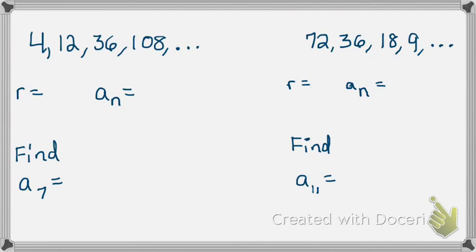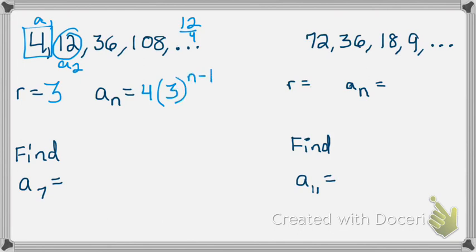Let's look at some other examples. We have 4, 12, 36, 108. First thing I want to find is my common ratio. Take your second term and divide it by your first term. So when I do 12 divided by 4, I get 3. That's my common ratio. Now to write my explicit formula, I'm going to write the first term which is 4 times my common ratio which is 3 to the power of n minus 1. And that's it. That's my explicit formula.